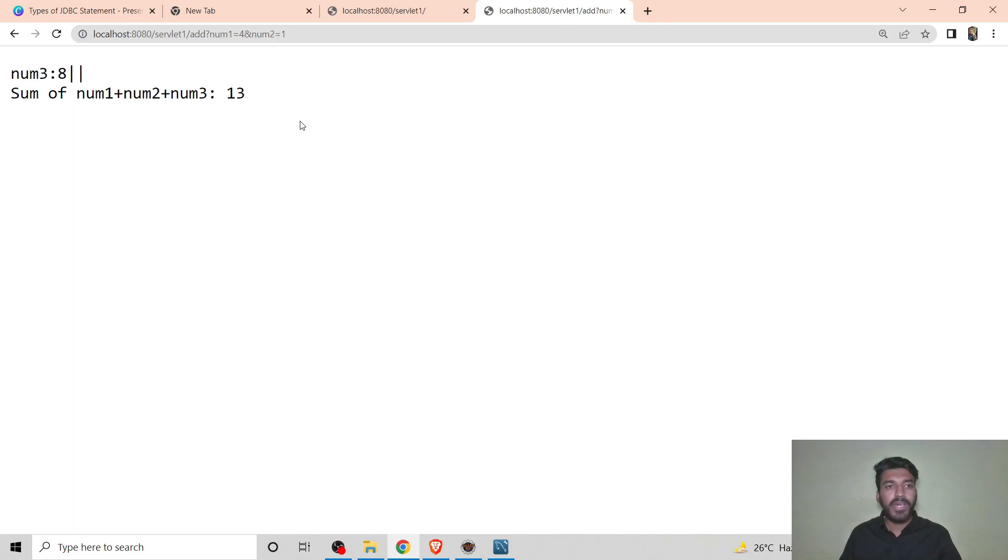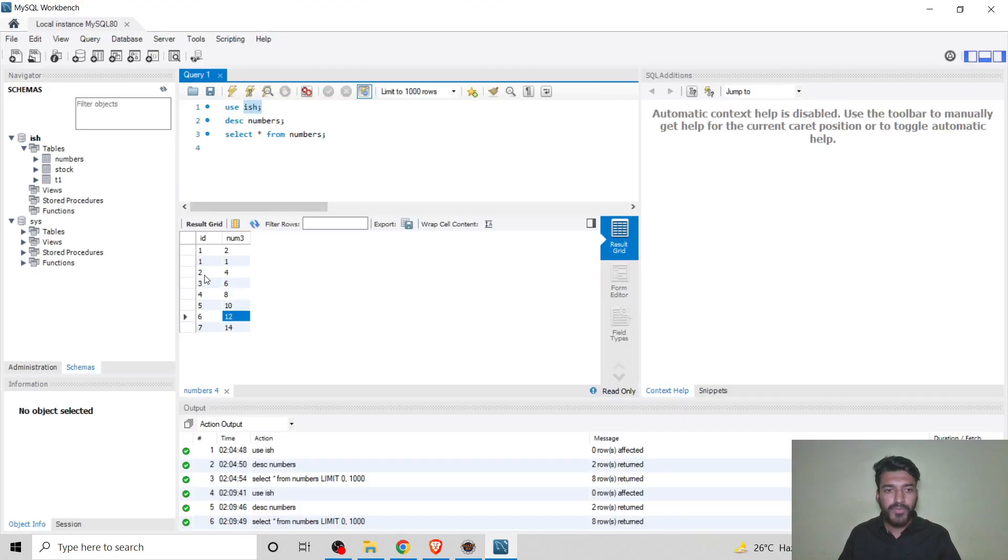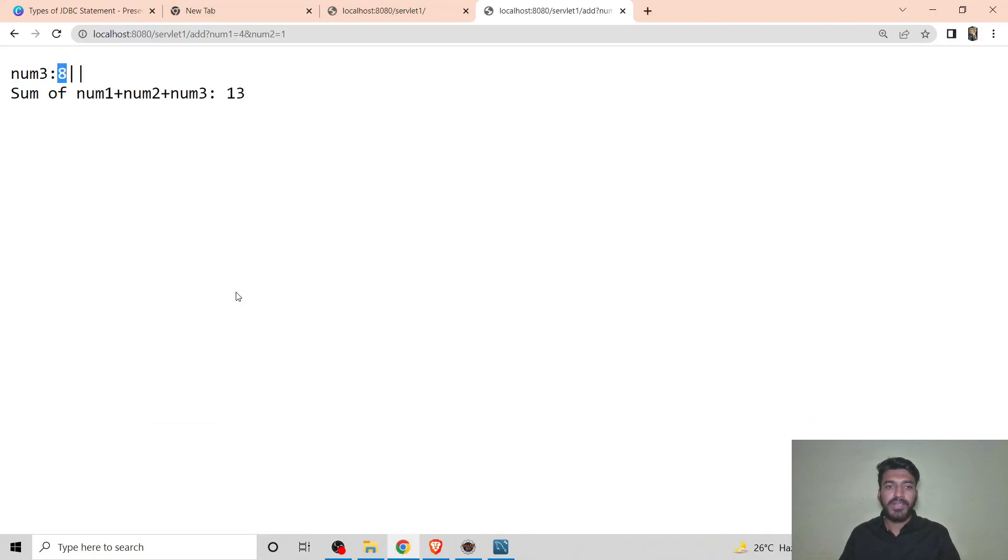Here we are getting our desired output as num3 is fetched from the database based on id. As num1 we entered is 4, and according to 4, the num3 will be 8. So we are getting our desired output. This was the first example of the Statement.